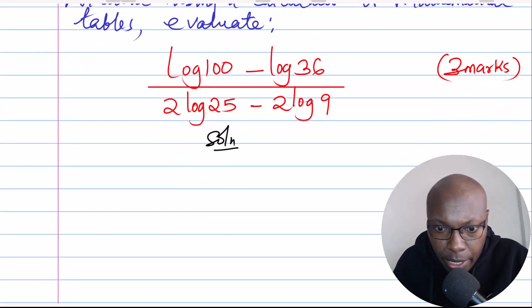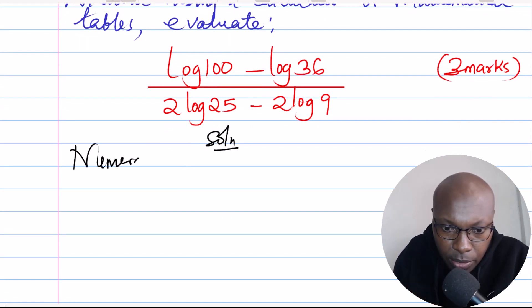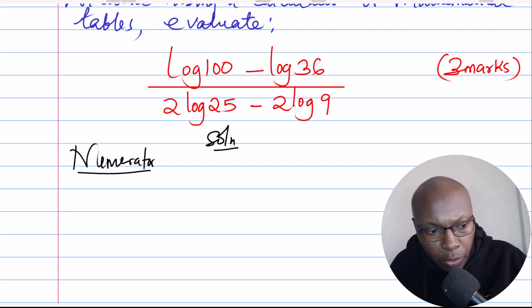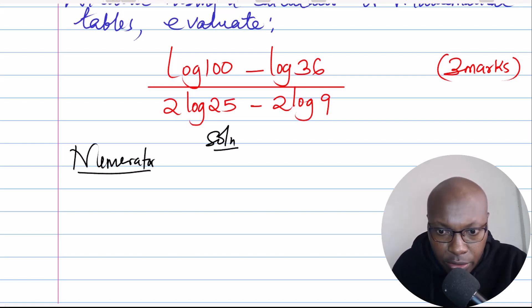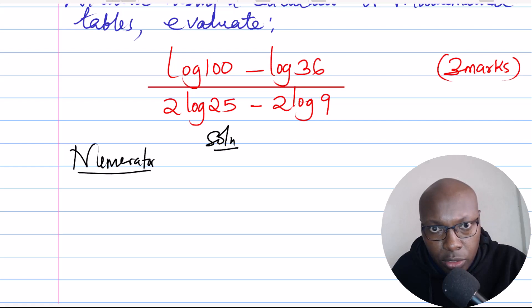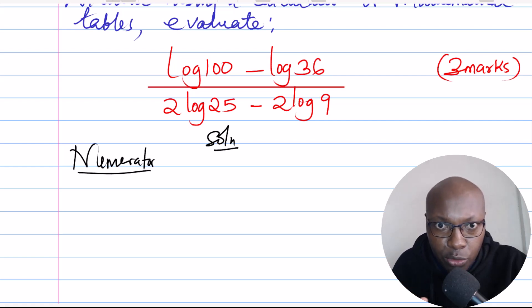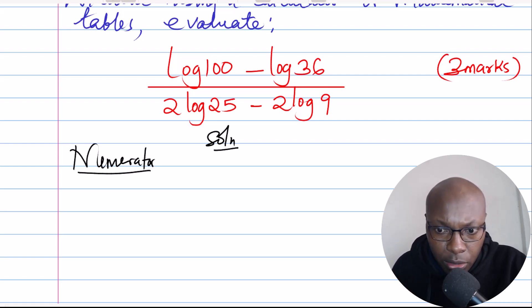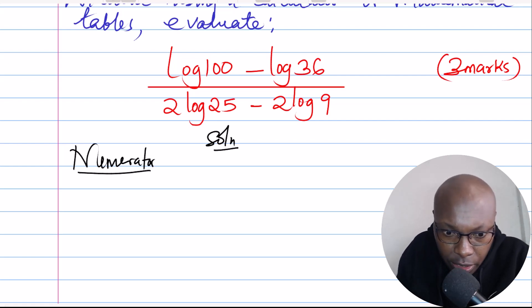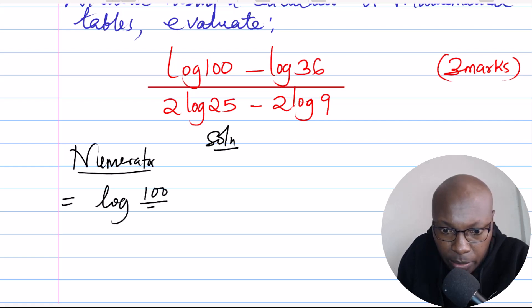We are going to begin with the numerator. For the numerator we have log of 100 minus log of 36. You must understand some basic laws of logarithms — those are the laws that will assist you in solving this question. For the numerator, log of 100 minus log of 36 can be written as a single log: log of 100 divided by 36.